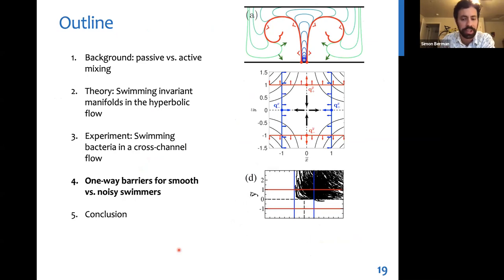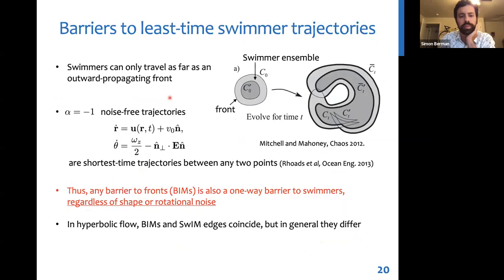So it turns out that the swimmer trajectories for any kind of swimmer in a given time are always limited by the furthest distance that a front would spread in that time. These are the fronts that I mentioned at the beginning of the talk. So if you start an ensemble of swimmers and you imagine an outward propagating front surrounding it, then at a later time the ensemble of swimmers will always be contained inside that front. And the reason for this is it turns out that the special alpha equals minus one case of the swimmer equations of motion, which corresponds to the front propagation, actually is the equations of motion for the least time swimmer trajectories between any two points. Thus, any barrier to fronts, like the BIMs that I talked about in the beginning of the talk, must also be a barrier to swimmers, no matter their shape or rotational noise.